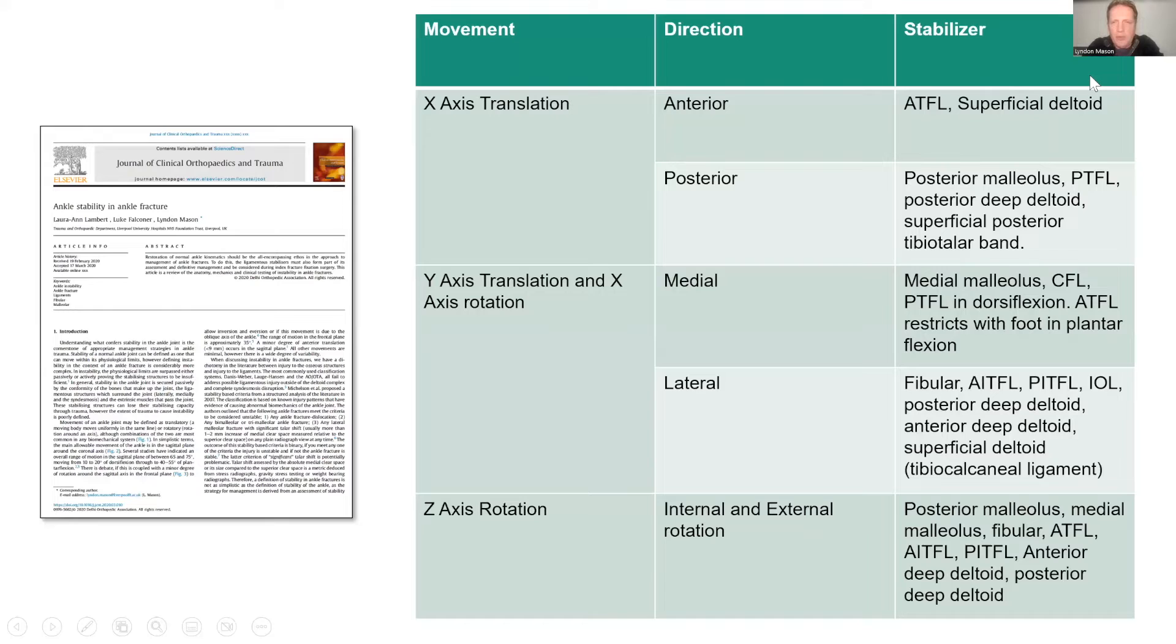To bring it back a bit first, this is a paper we did about two years ago now on the different stability factors in an ankle. You have structures preventing X-axis translation, Y-axis translation and rotation, and Z-axis rotation. All biomechanical studies prior to 2017 were just looking at translation—front to back translation—and they were ignoring any rotational issues. But you can see the Z-axis rotation on the bottom there; the posterior malleolus is part of that, so the bit that we were missing was your rotational injuries.